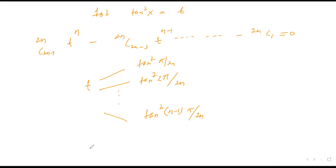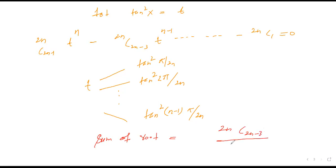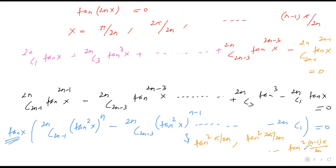तो यानि मुझे sum of roots निकालना है। Sum of roots की value क्या हो जाएगी? 2Nc(2N−3) upon 2Nc(2N−1) — इसको आप solve कर लीजिए, यहां से आपको same result मिल जाएगा: (n−1)(2N−1)/3। तो आगे साथ इसे याद रखेंगे — यह complete series।